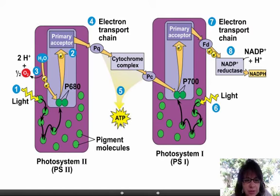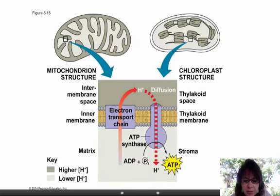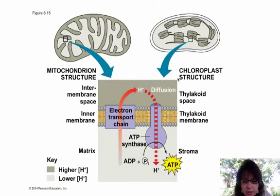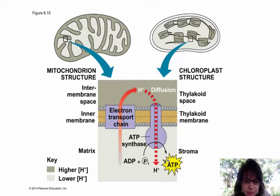Let's compare mitochondria and chloroplasts in how we're making ATP. It turns out you make ATP through ATP synthase, very similar to what we learned about in the mitochondria. Again, electron transport chains pump hydrogens, we get a gradient of hydrogens, they flow down through ATP synthase, and we make ATP. Biology loves to reuse things that work efficiently — this is an example of it.